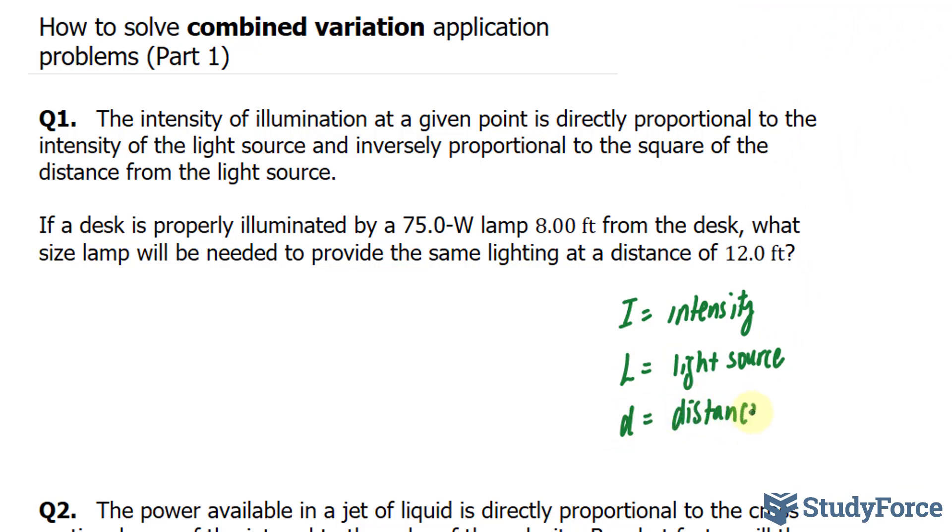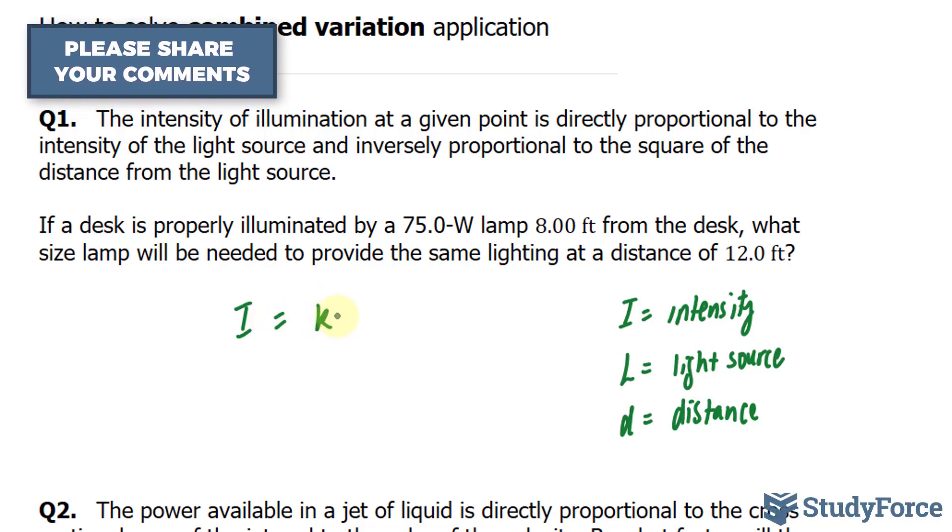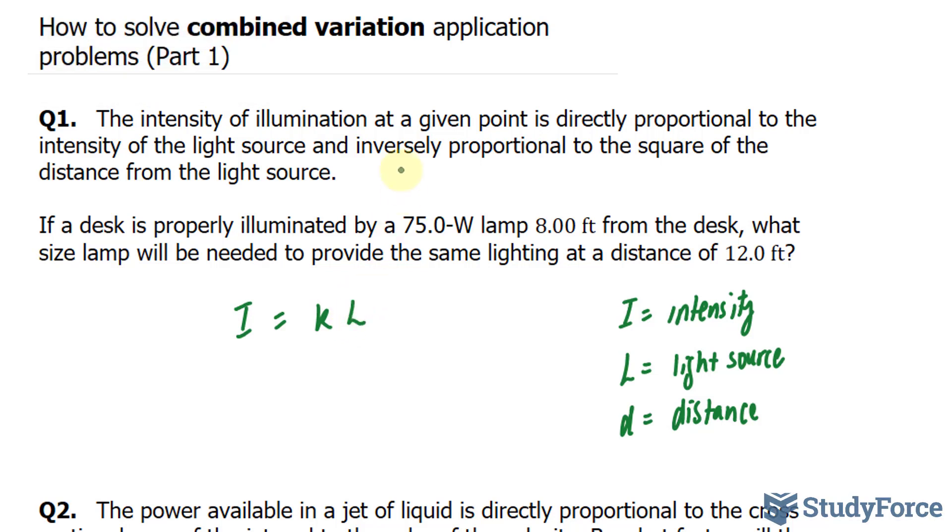It's very important that you assign letters for your variables, especially if they're not given to you. Now, let's re-read the question and create an equation from it. The intensity of illumination I at a given point is directly proportional (don't forget your constant of variation) to the intensity of the light source L and inversely proportional, divided by the square of the distance D squared.